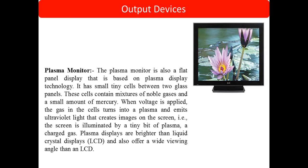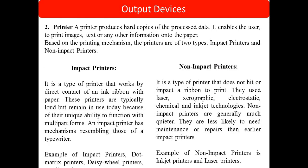Plasma displays are brighter than liquid crystal displays and also offer a wider viewing angle than LCD. Plasma is also considered better compared to LED. The next output device is the printer. Printers produce hard copies of processed data, enabling the user to print images, text, or any other information on paper. There are mostly two types of printers: impact printers and non-impact printers.